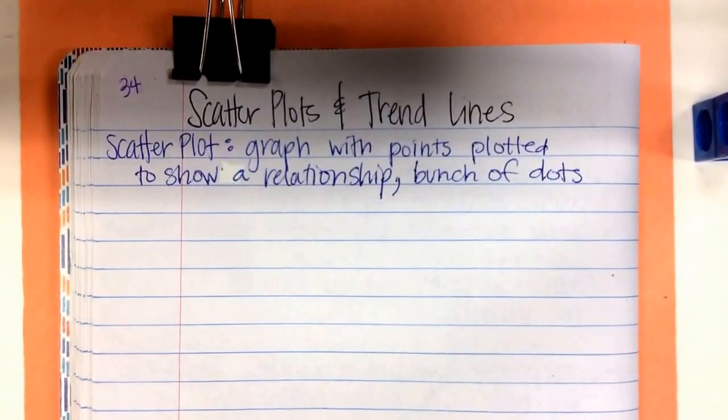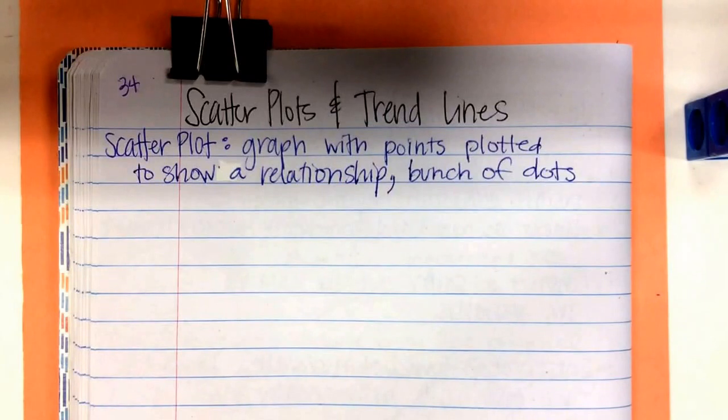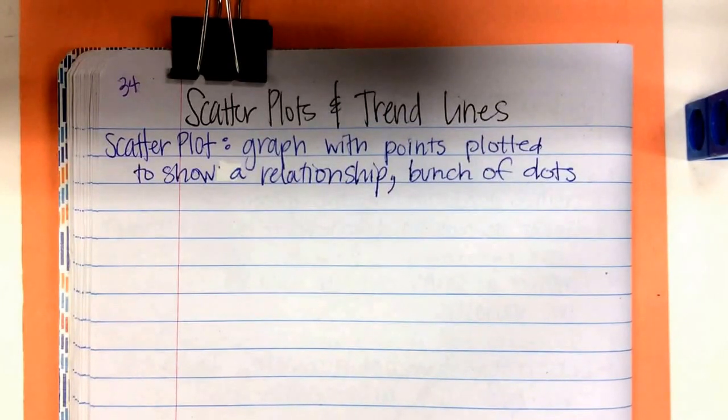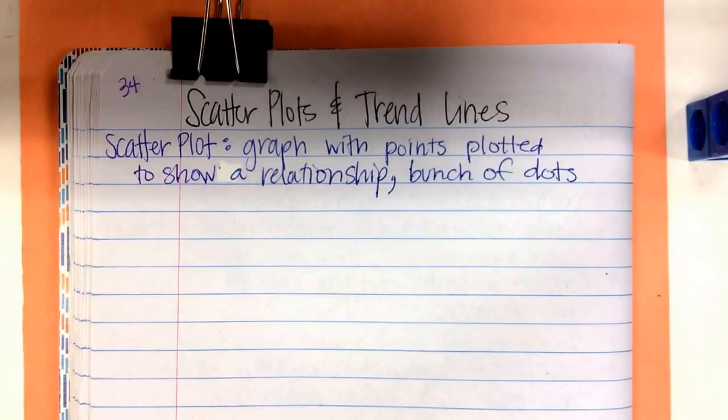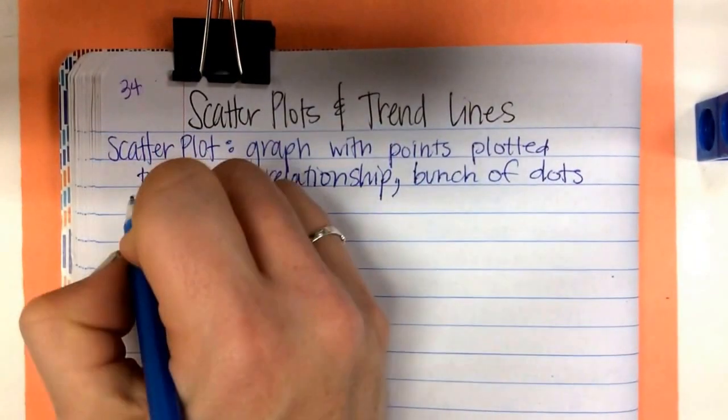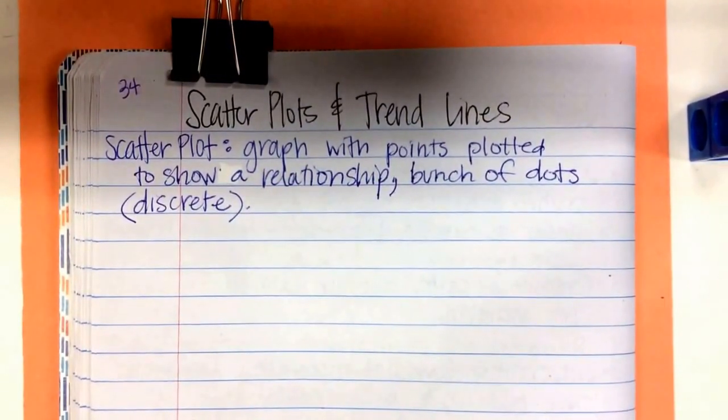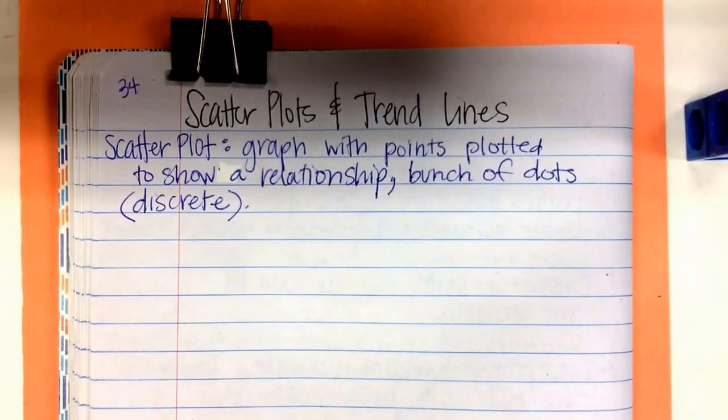Do you remember what we called this earlier this year when we did types of graphs? It started with a D. I heard it, discrete. It's just a bunch of dots all over the place.